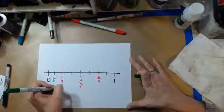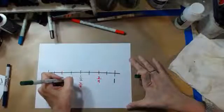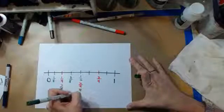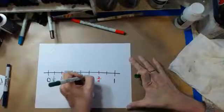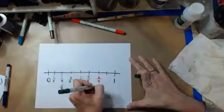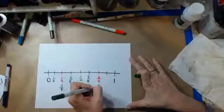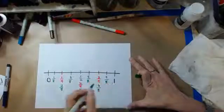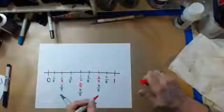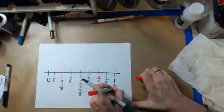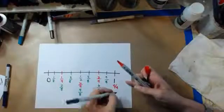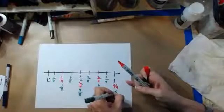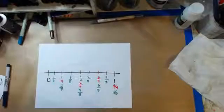One eighth, two eighths, three eighths, four eighths, five eighths, six eighths, seven eighths. And then, of course, this is four over four, eight over eight.